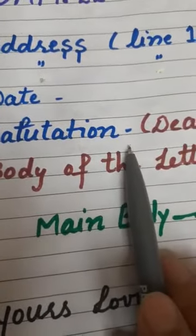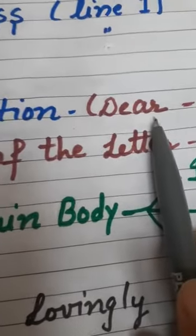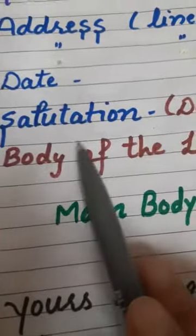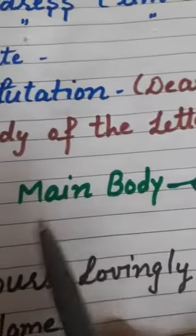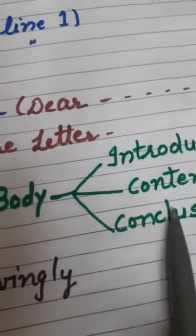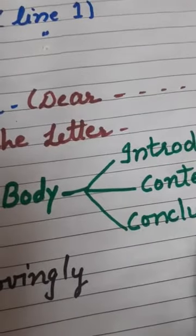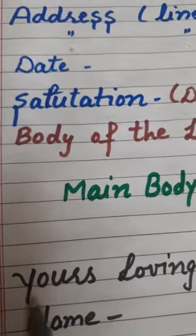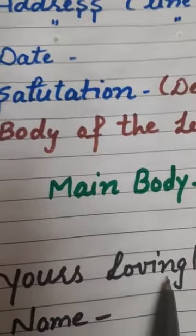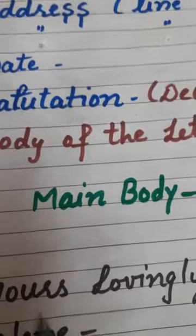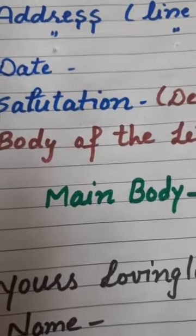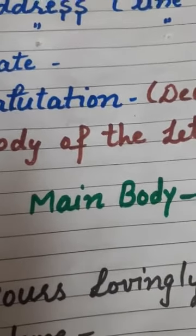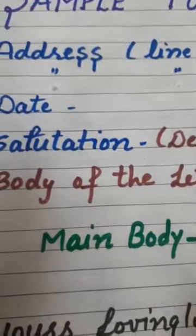After the date, leave one more line and write the salutation. The salutation always starts with 'Dear.' After the salutation, leave one more line and write the body of the letter. The body has three parts: first is the introduction, second is the content, and third is the conclusion. After the body, leave one line and write 'Yours lovingly,' then your name.